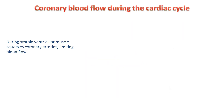A particular feature of the coronary circulation is that when cardiac muscle contracts during systole, the arteries running through the ventricles become squashed, making it difficult for blood to flow through them. The vessels can become squashed to such an extent that they are completely obliterated.